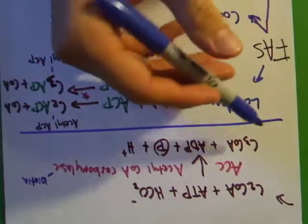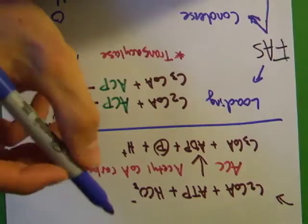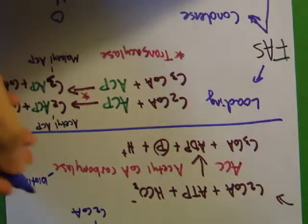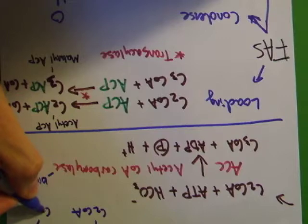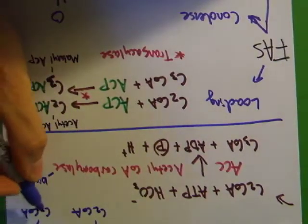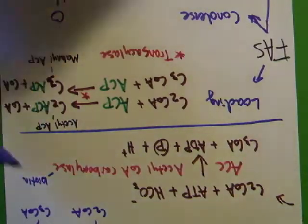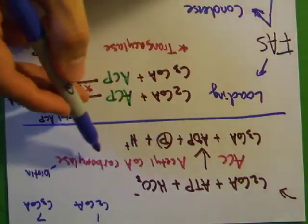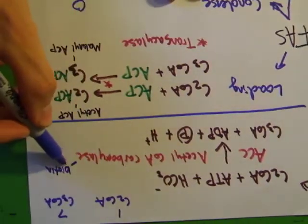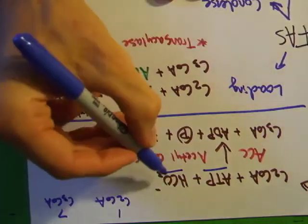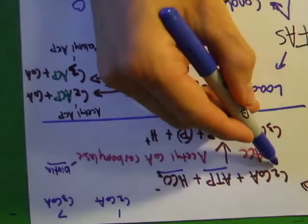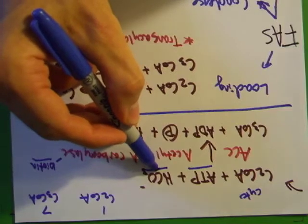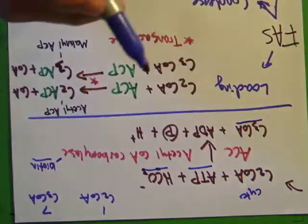The ACC reaction is the key regulatory step. When making a fatty acid, you need one acetyl-CoA and about seven C3-CoAs. To make the C3-CoAs, the ACC (acetyl-CoA carboxylase) reaction takes acetyl-CoA and adds a carbon onto it using biotin and an ATP, producing malonyl-CoA.